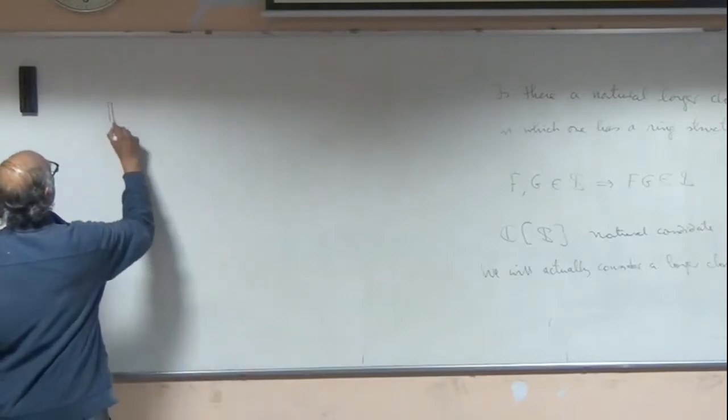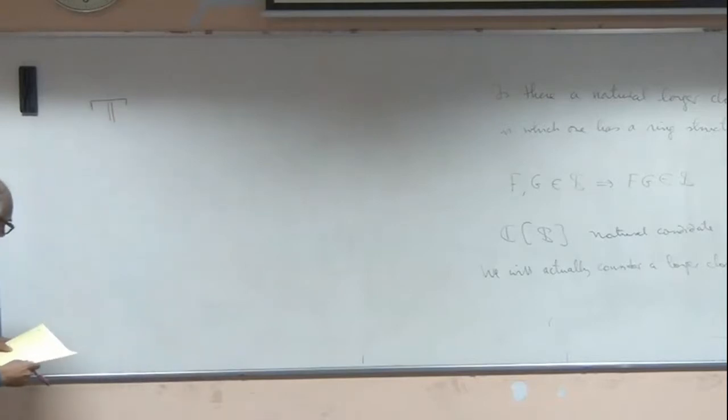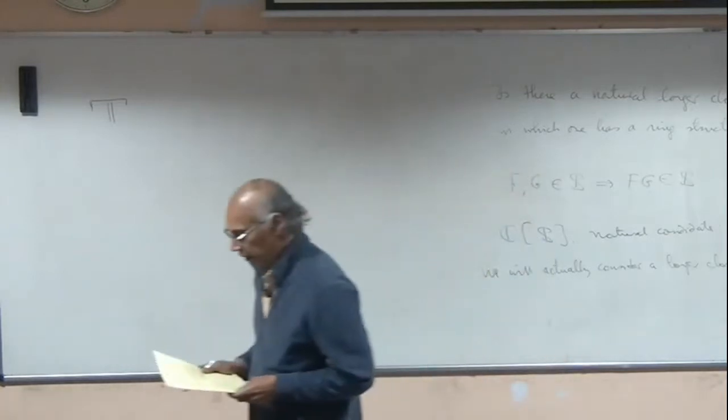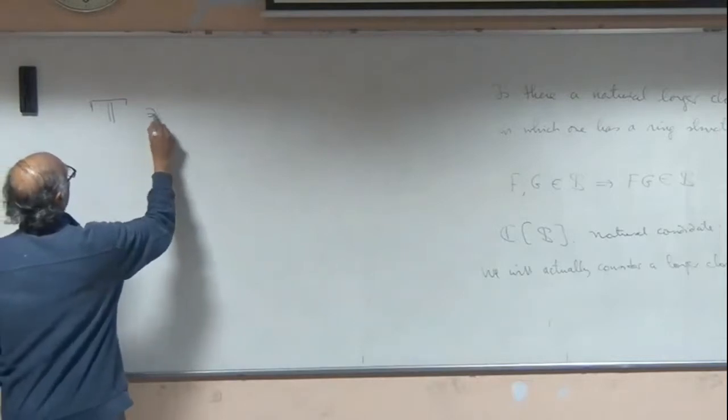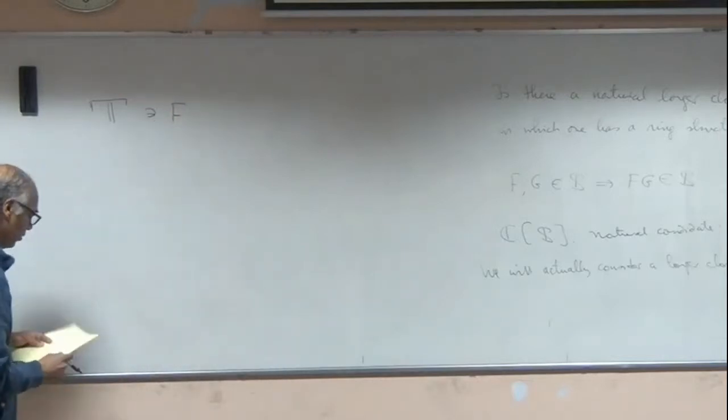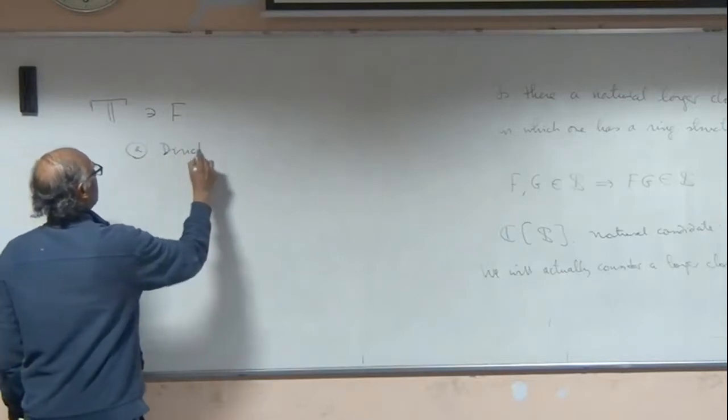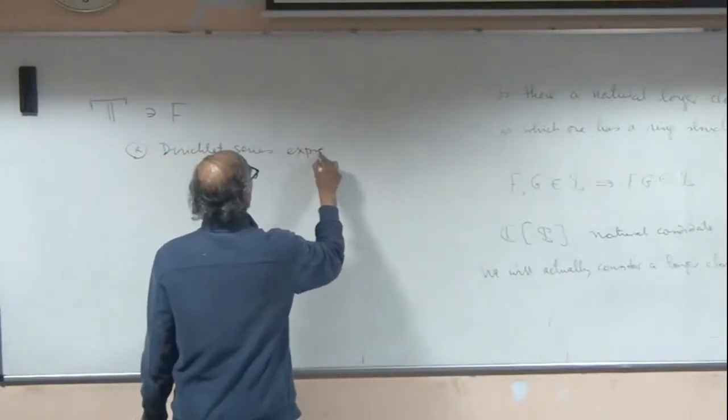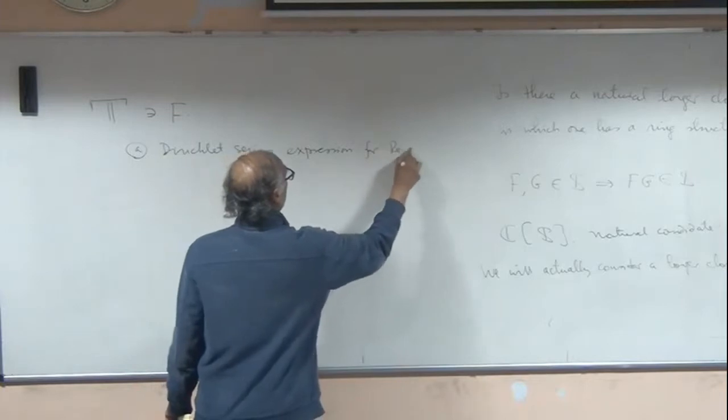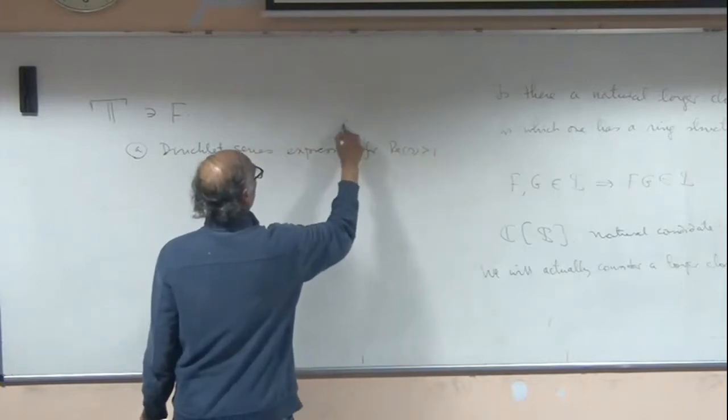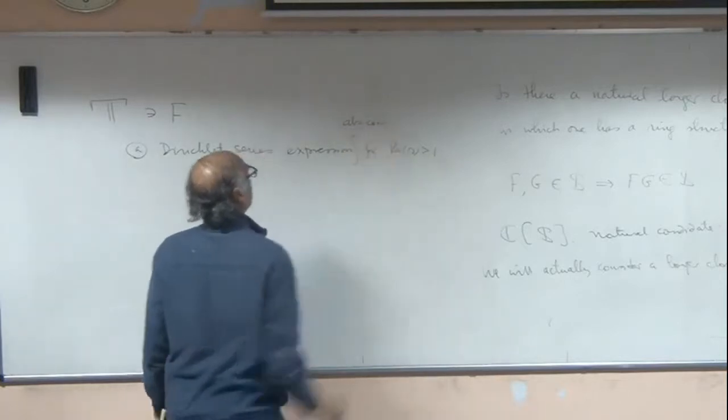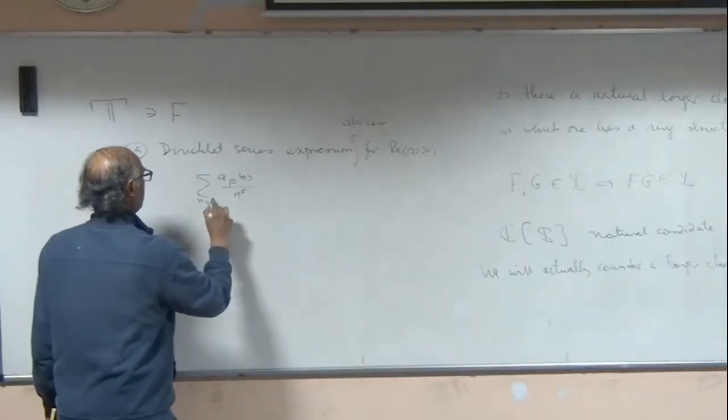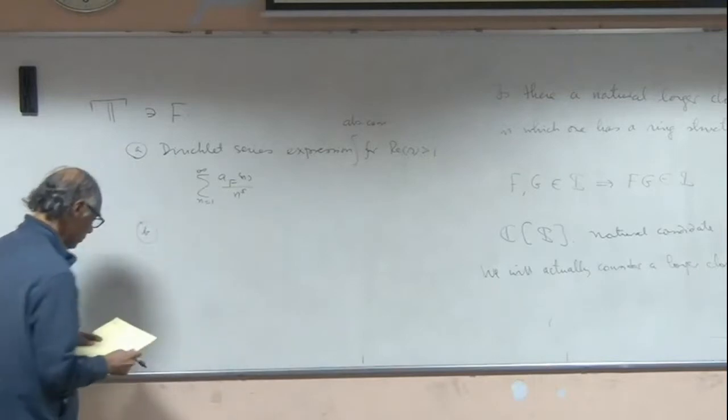So now we will first start defining class T. And again, I'm going to state the properties - unless I really need to, I'm going to state properties generally because you don't need to know the exact details. So T will consist of functions which have initially a series expression, a Dirichlet series. And it's important to say I want it to be absolutely convergent for real part of s bigger than one.